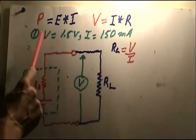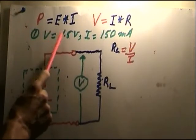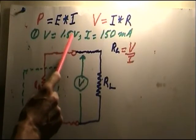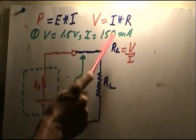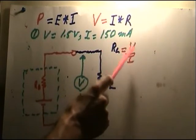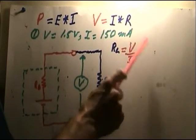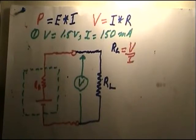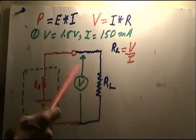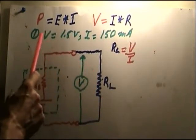On this meter I have, you have 1.5 volts at 150 milliamps. Well, you just take the voltage divided by the current and you get 10 ohms.